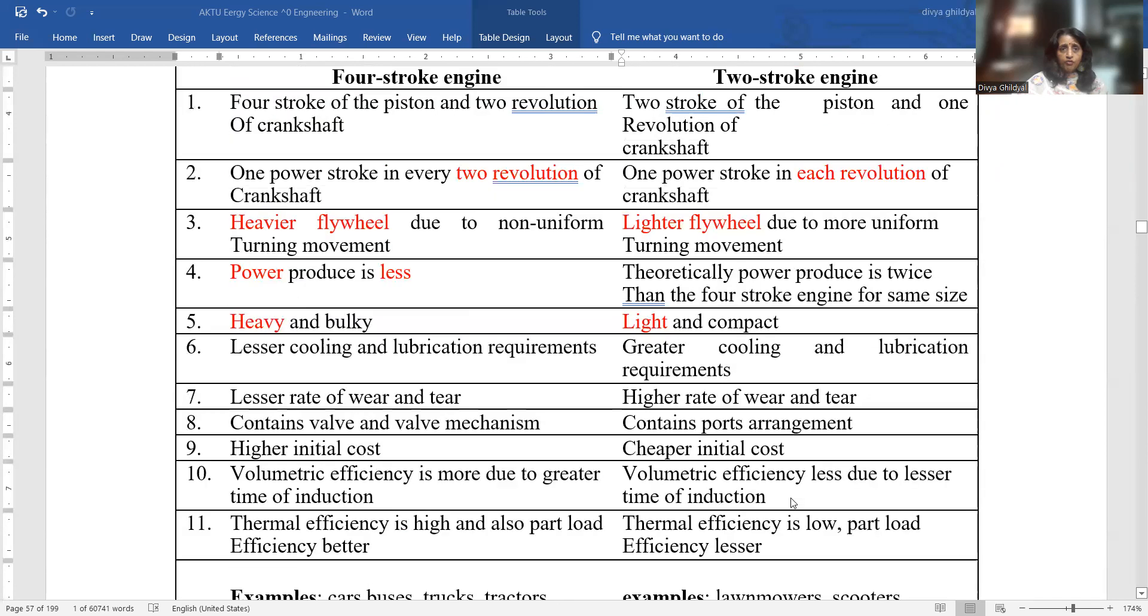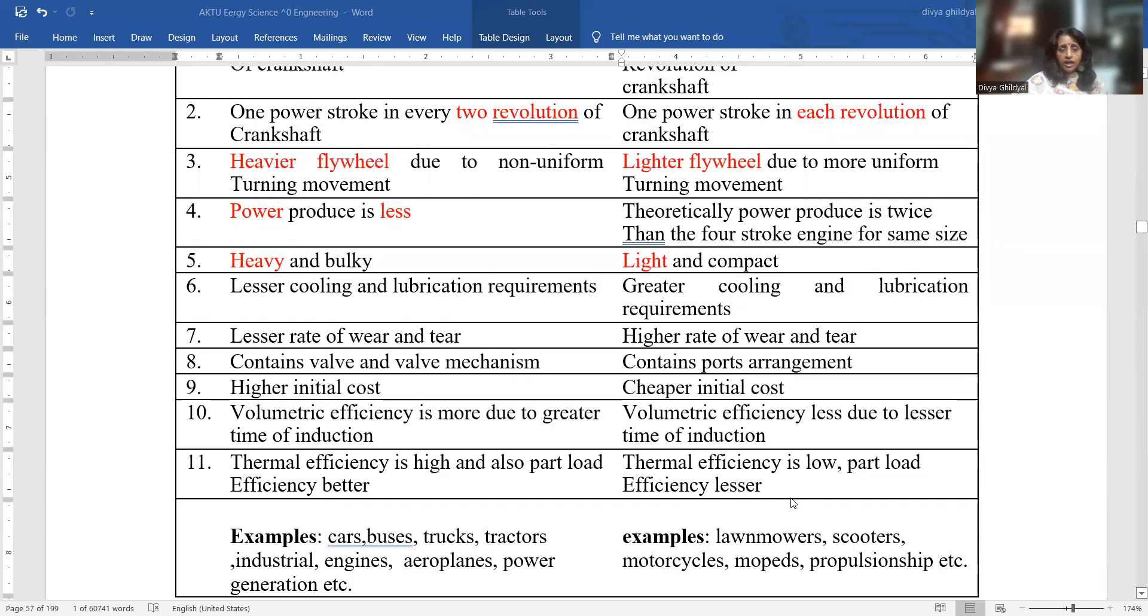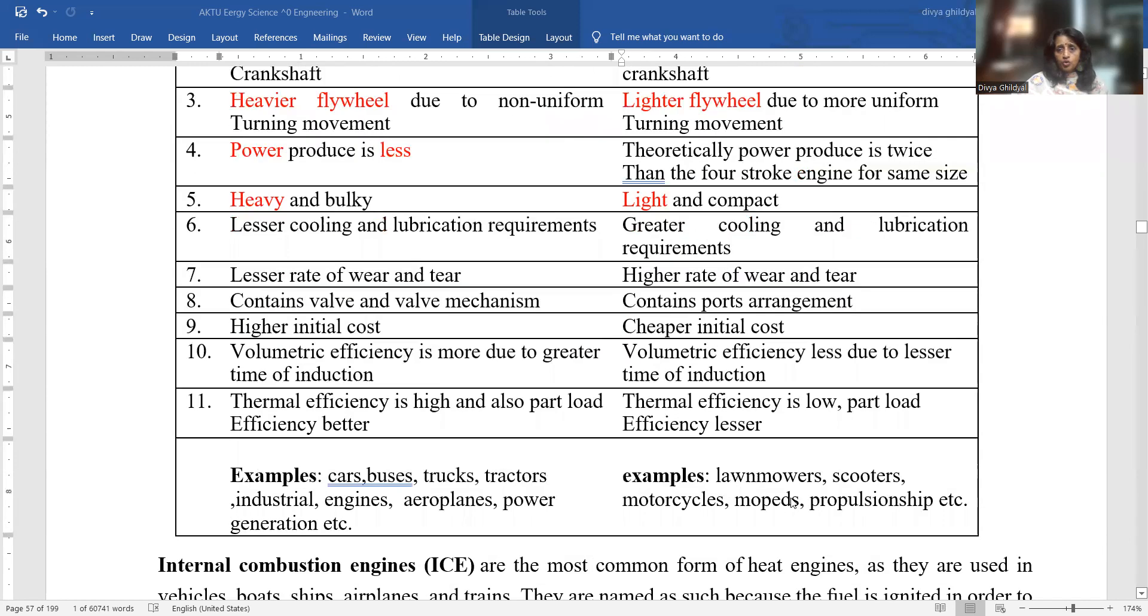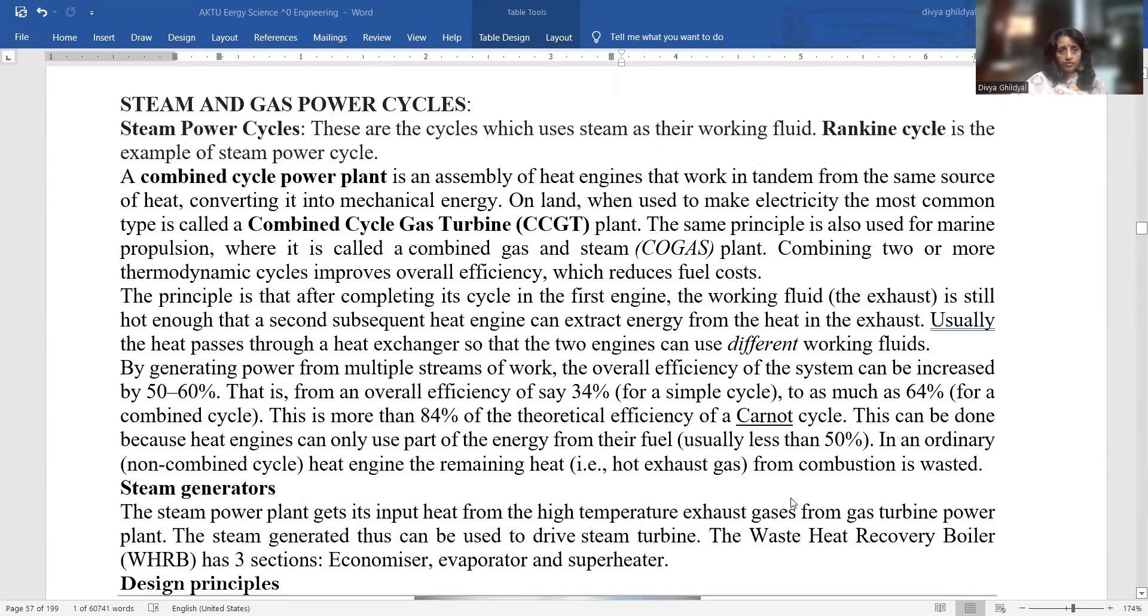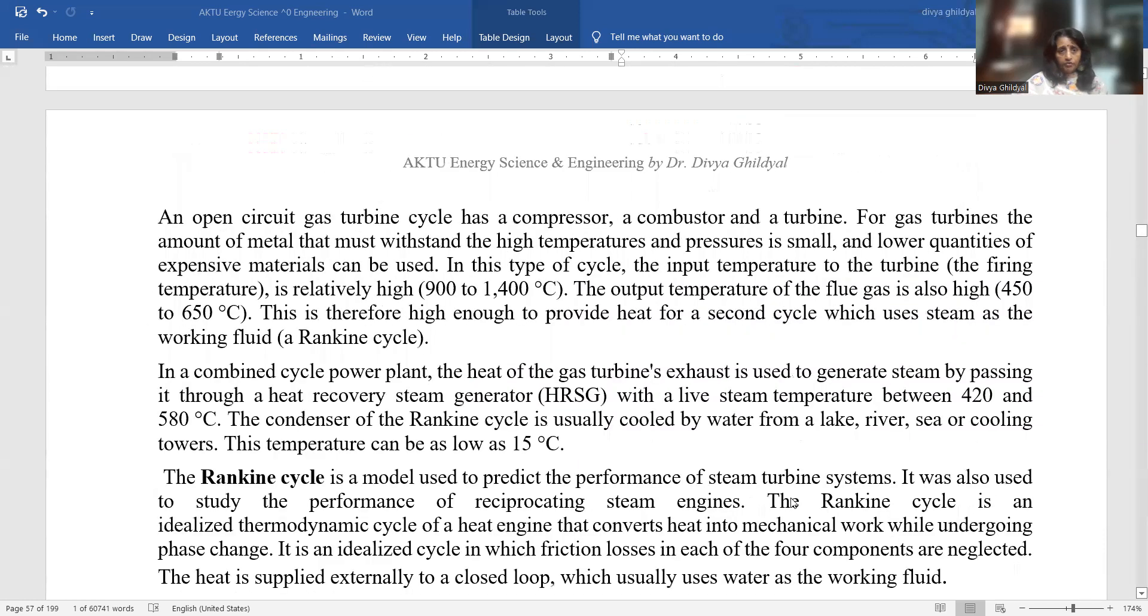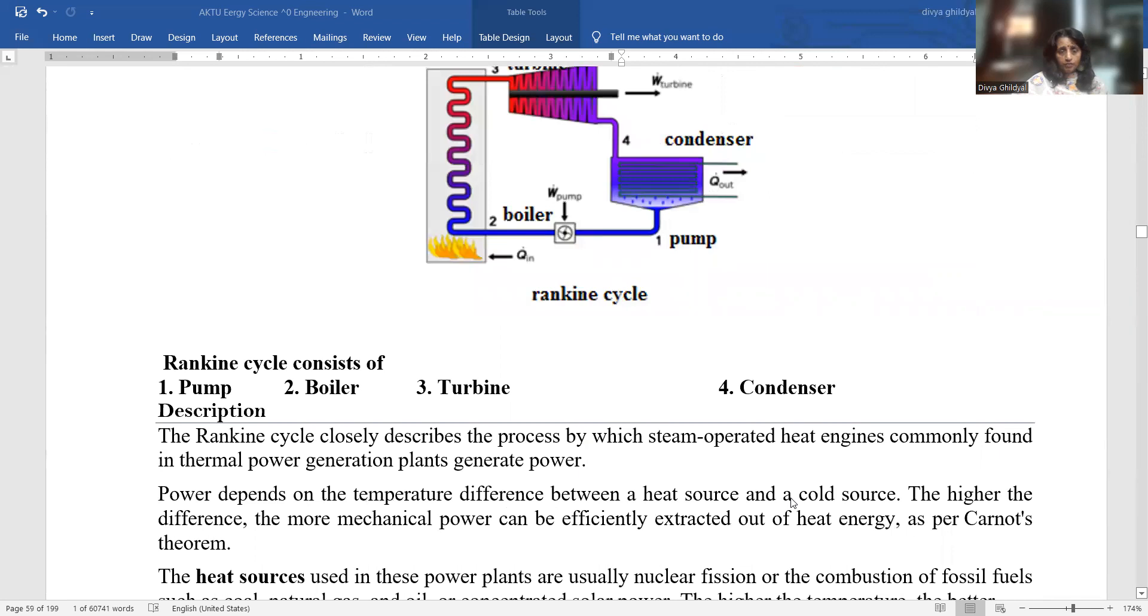Examples of four-stroke can have car, buses, trucks, tractors. Two-stroke can be scooter, motorcycle, propulsion ship. So here we have the different types of engines, whether two-stroke and four-stroke.